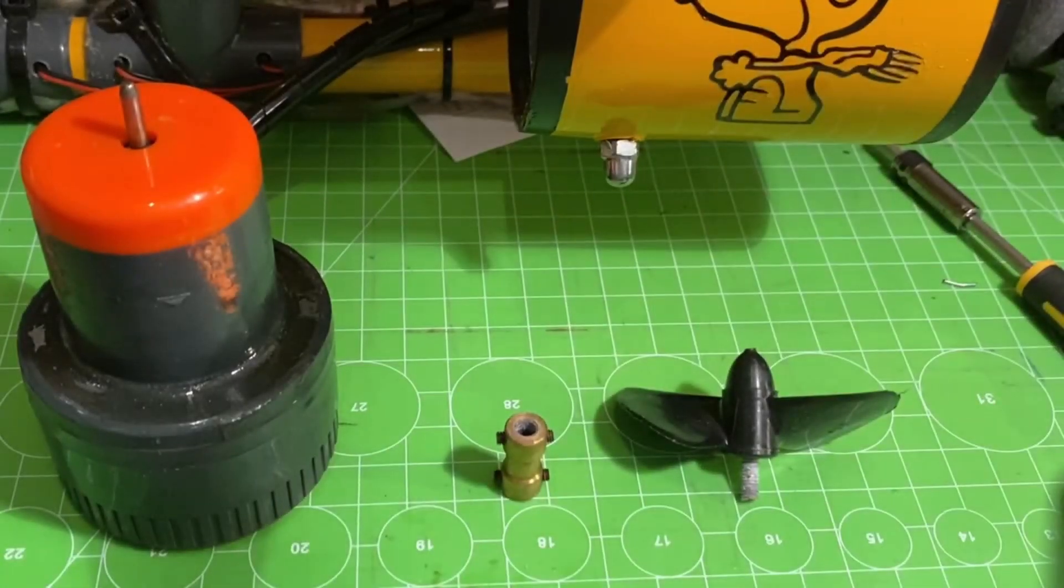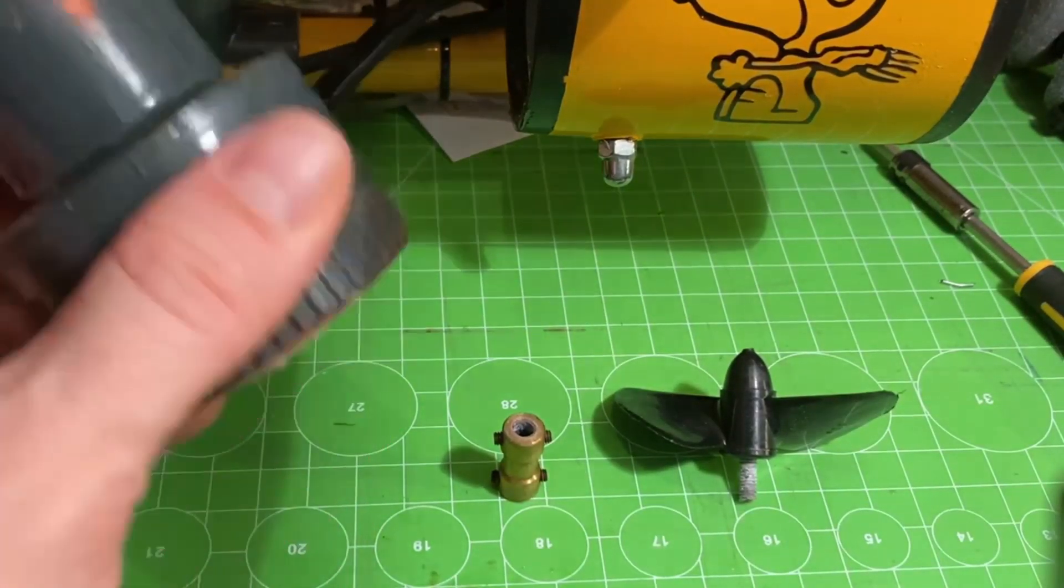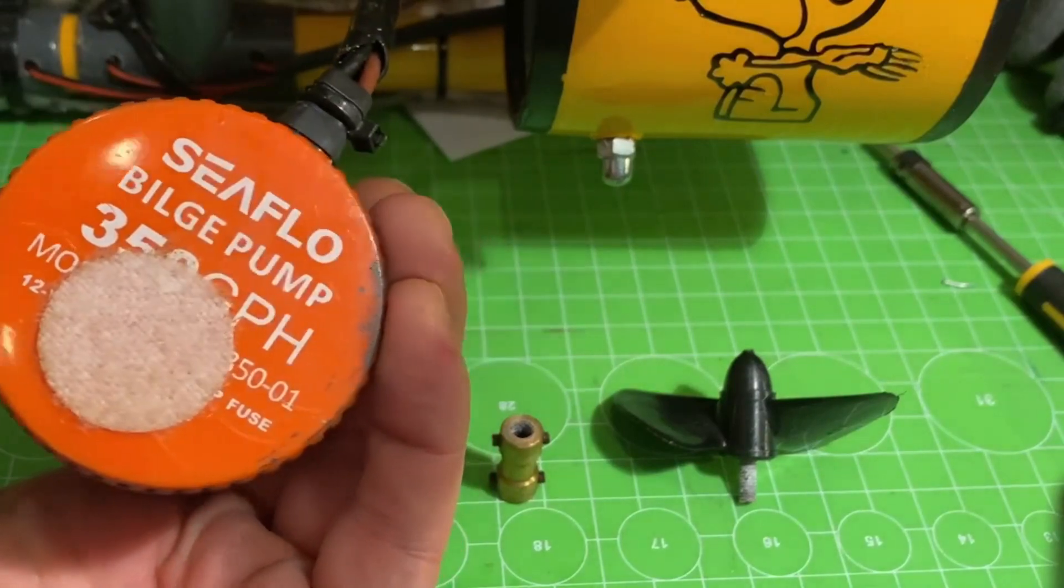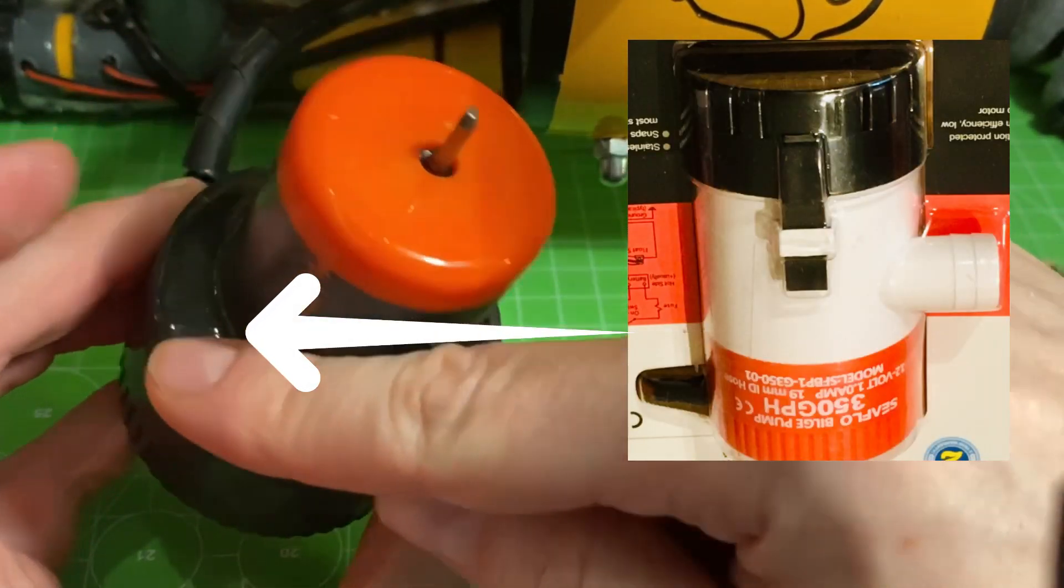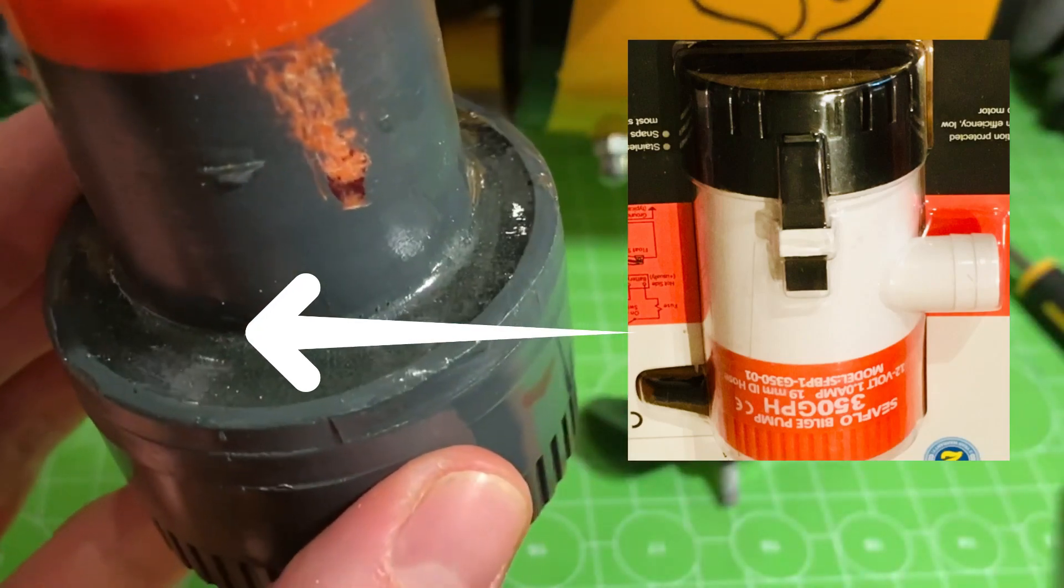You start out by taking your bilge pump and cutting off the white housing, which you can see here just above the red section. That leaves you quite a bit of space there.